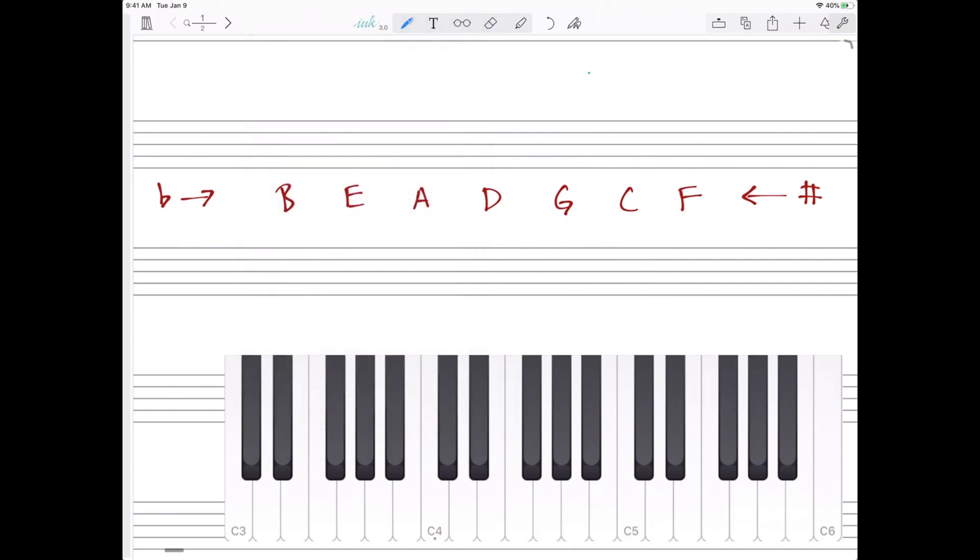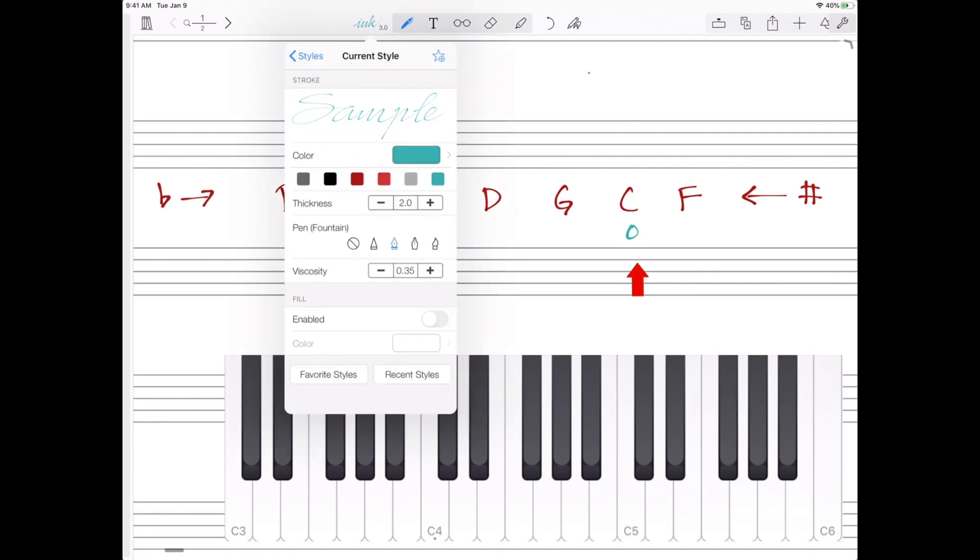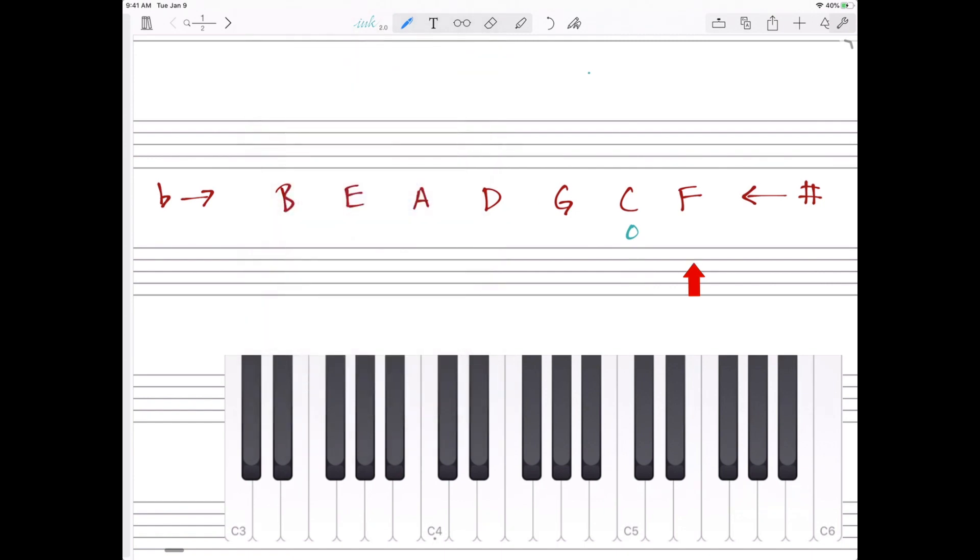Again, C has no sharps or flats. The key of F has one flat. That flat happens to be B flat. So in this one, with flats, we're going to skip ahead one note in the same order, starting with B.